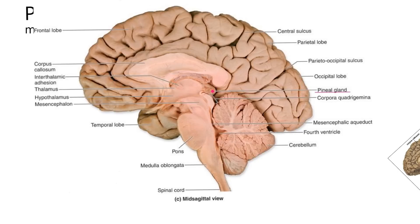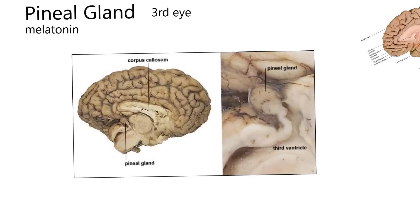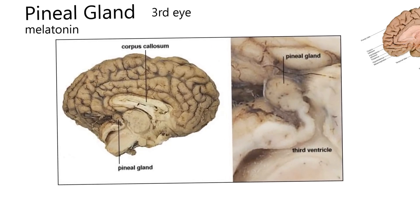Let's look at a better picture of a pineal gland — I believe this is a sheep pineal gland. This brain is oriented in the opposite direction: the left part of the screen is forward, and this is toward the back of the head. Here's our pineal gland pointing kind of backwards. This enlarged view shows how it looks like a little pine cone on that part of the brain.